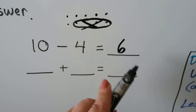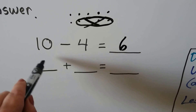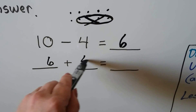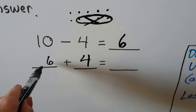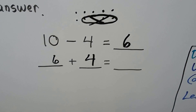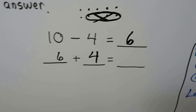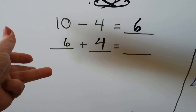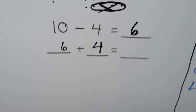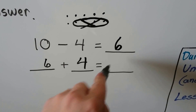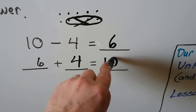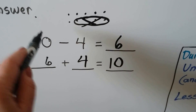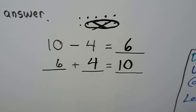We know the difference six is going to be the addend up here. Six plus four — counting on from the larger addend: six, seven, eight, nine, ten. Our sum is ten, and it's the same as the minuend for the subtraction sentence, so we know we did our subtraction correctly.